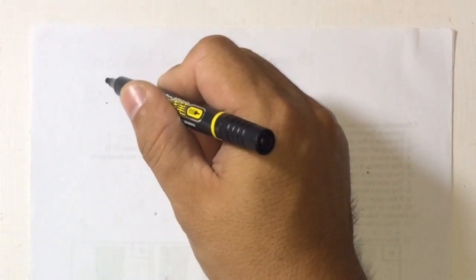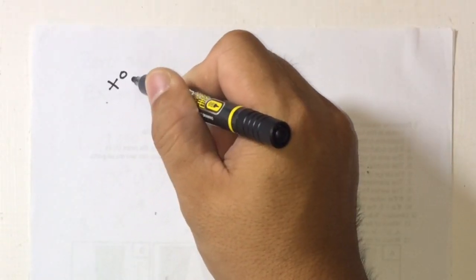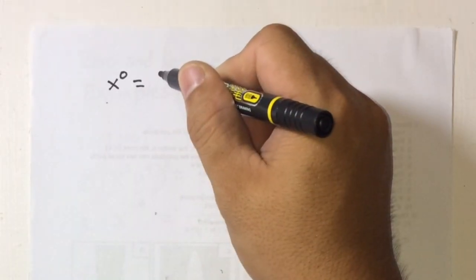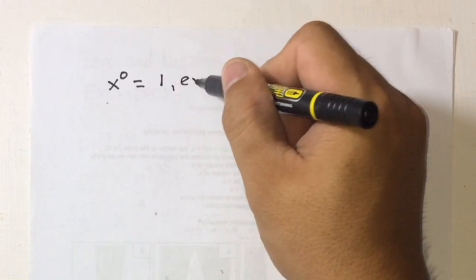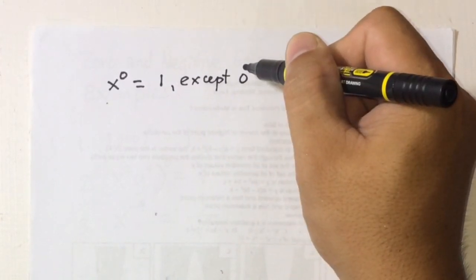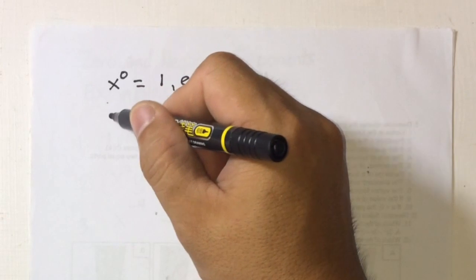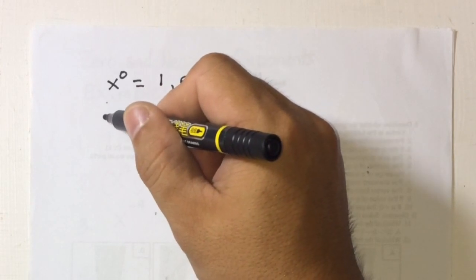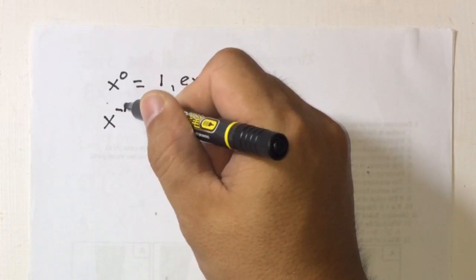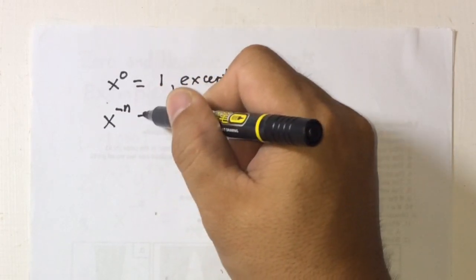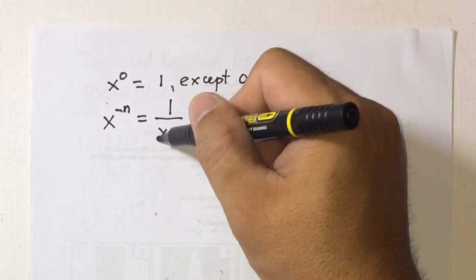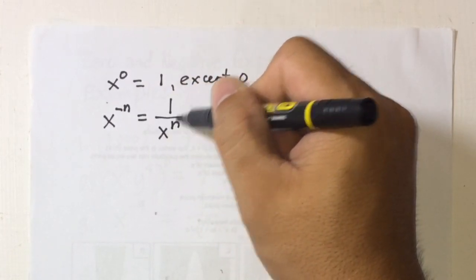Any number raised to the power of 0 will be equal to 1, except for 0. And if we're going to have a negative exponent, x to the power of negative n, this will be equal to 1 over x to the power of n.